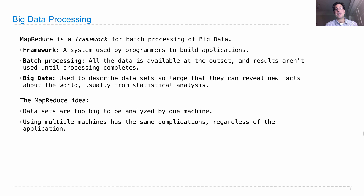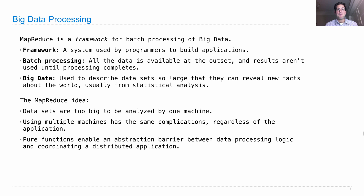Using multiple machines has some complications, regardless of the application. Pure functions enable an abstraction barrier between the actual data processing you're doing and the effort of coordinating a bunch of machines in a distributed application. So by modularizing these two pieces of logic — the data processing itself and the coordination of lots of machines — we can make our lives easier, because we can implement the distributed application coordination logic just once and use it again and again for every data processing application we want.